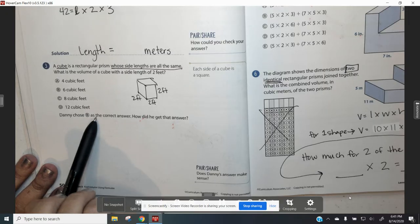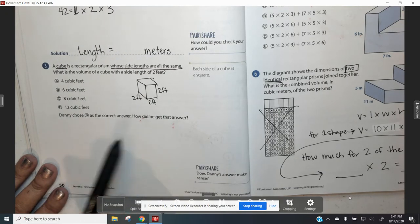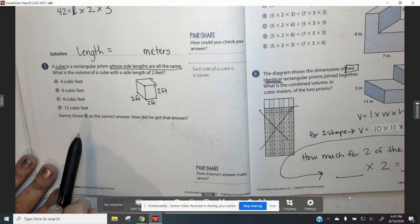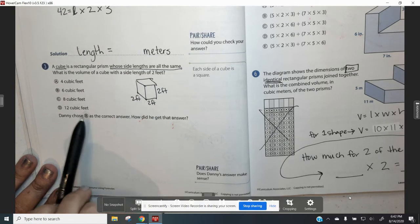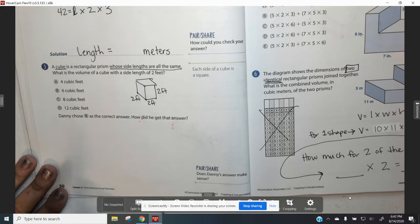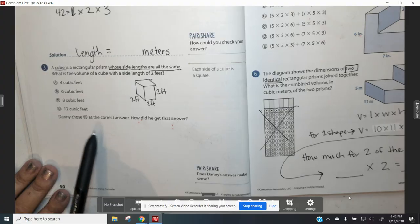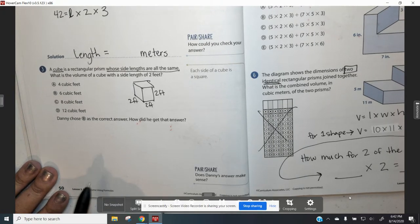Now Danny chose B as his correct answer. How did he get that answer? I'm going to tell you something. Danny is not correct. So I want you to find the right answer first, and then I want you to tell me what Danny did wrong to get the wrong answer. Sometimes the people in this part of the problem are correct, but in this case today, he's not.